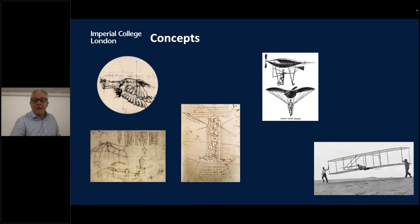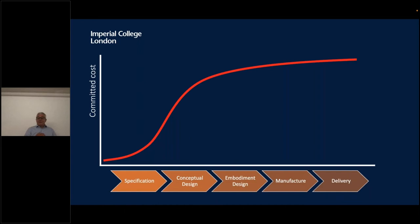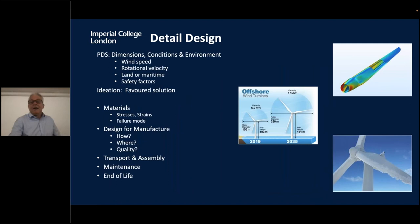In the concept phase, you start committing to proper solutions — and importantly, to costs. If you get it wrong in the concept phase, you're already committing to enormous costs. If you find out a mistake during manufacture, or worse during delivery, it will be very difficult and expensive to solve. Once we have a proper concept, we can proceed to detailed design.